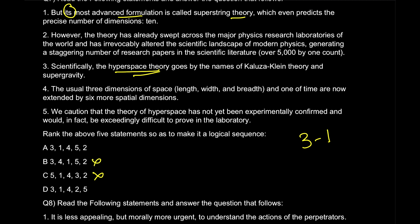Option B goes out. Now the continuation is three one four, and three one four remains the same. So no need to think much more. Read it along with it so that you get an idea. 'The usual three dimensions of space and the one of time are now extended by six more spatial dimensions.' After that, what should we take - two or five? 'However, however' - I'm so sorry - 'how the theory has already swept' - this is a complete change of idea. Let's see number five: 'We caution that the theory of hyperspace has not been experimentally confirmed.' Uh-huh, that's a particular, that's a better continuation. That makes the answer as three one four five and two. Option A is the correct answer over here.